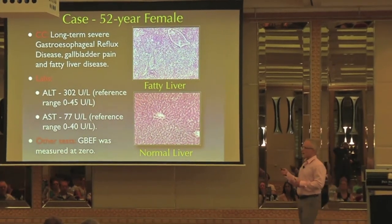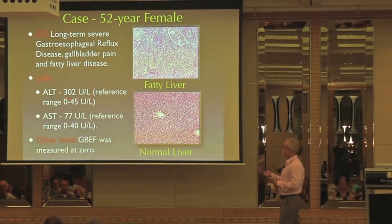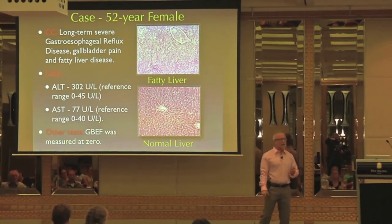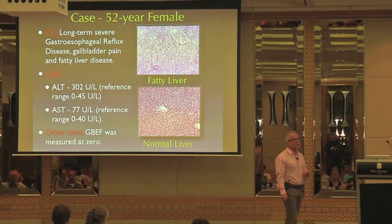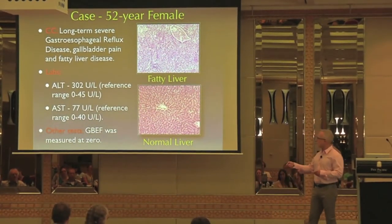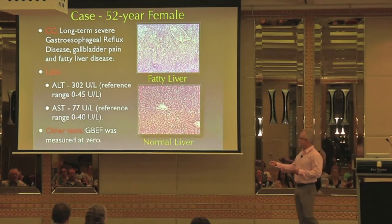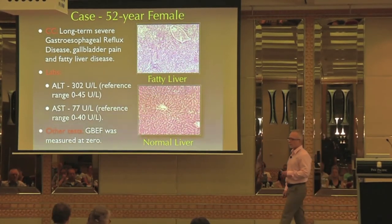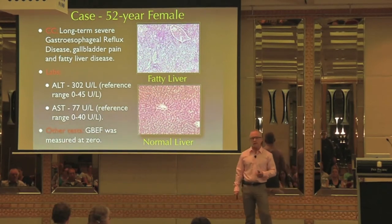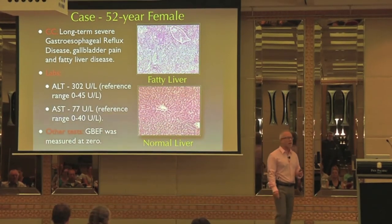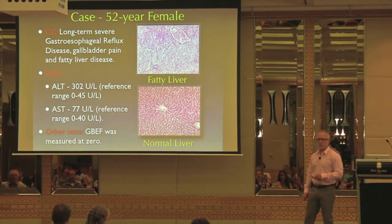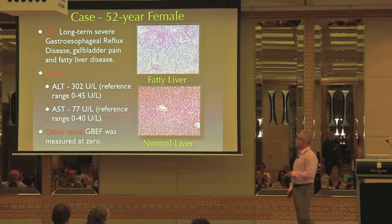She's had blood labs done — her ALT and AST. Those are two enzymes produced by the liver. They shouldn't be any higher than 40–45 for ALT and 40 for AST. Personally, in my own practice, I don't like to see them above 20. Fifteen to twenty is really a healthy level.